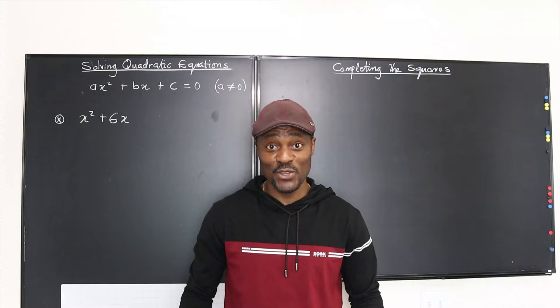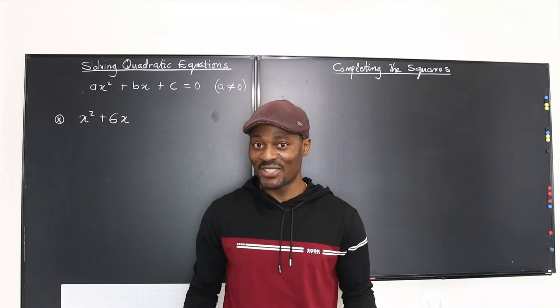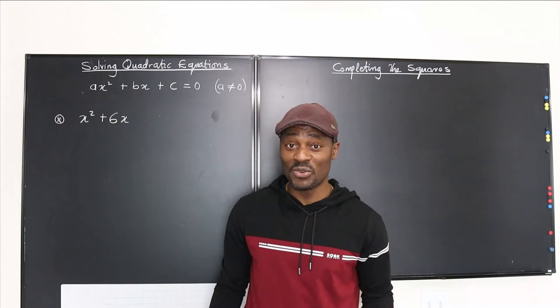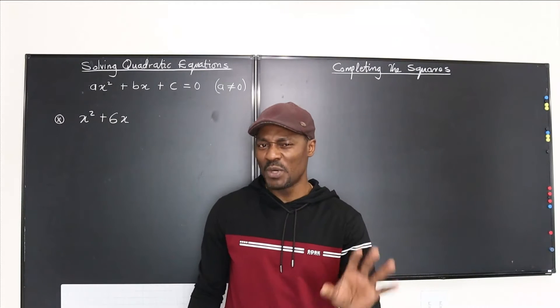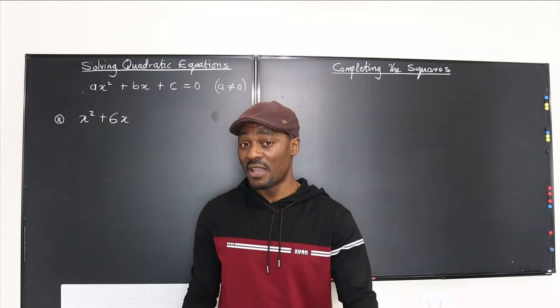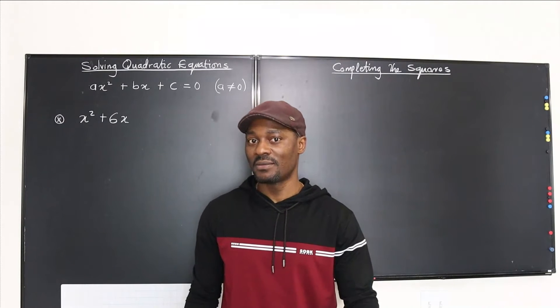Sometimes completing the square is the only way you will know what the center of a conic section is, or the vertex, or the directrix. You might have to restructure the quadratic that you have, no matter how complex it looks.